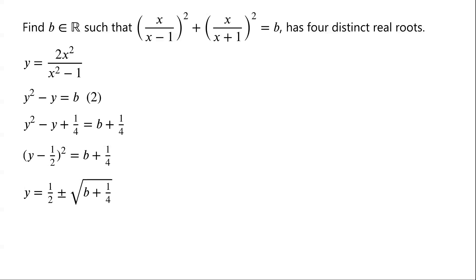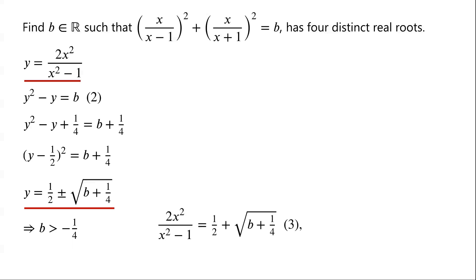For the original equation to have four distinct real roots, equation 2 must have two distinct real roots in y, so b must be greater than −¼. Since y = 2x²/(x²−1) and y = ½ ± √(b + ¼), we have two quadratic equations. The first: 2x²/(x²−1) = ½ + √(b + ¼). We label this as equation 3.